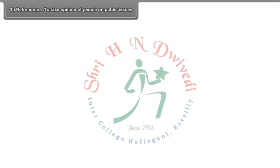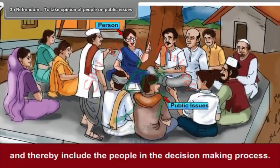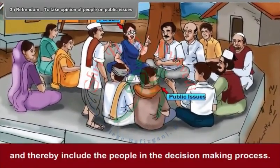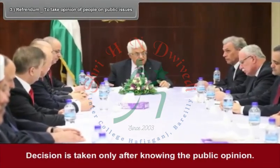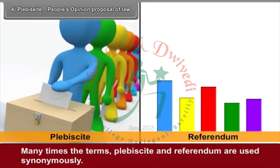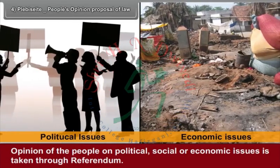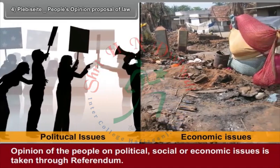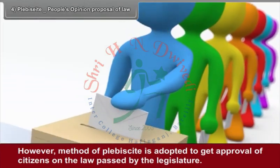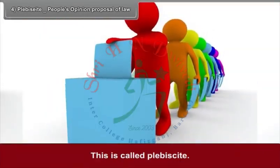Third: Referendum — to take the opinion of people on public issues. This method is adopted to know public opinion on some important public issues, and thereby include the people in the decision-making process. A decision is taken only after knowing the public opinion. Fourth: Plebiscite — people's opinion on a proposal of law. Many times the terms plebiscite and referendum are used synonymously. Opinion of the people on political, social, or economic issues is taken through referendum. However, the method of plebiscite is adopted to get the approval of citizens on a law passed by the legislature. For example, in Australia, plebiscite is needed for amending the constitution.